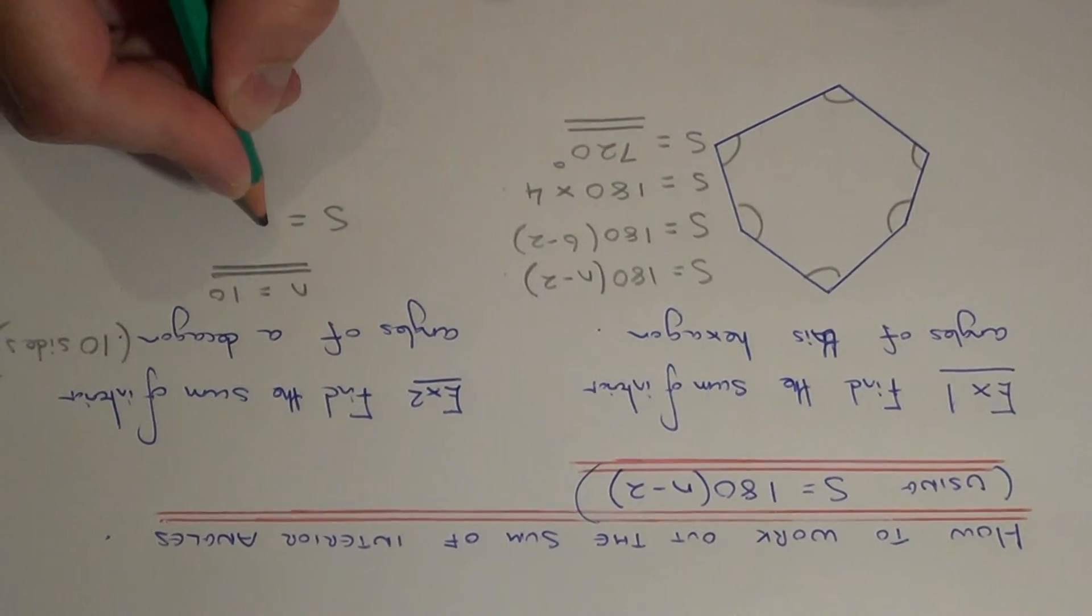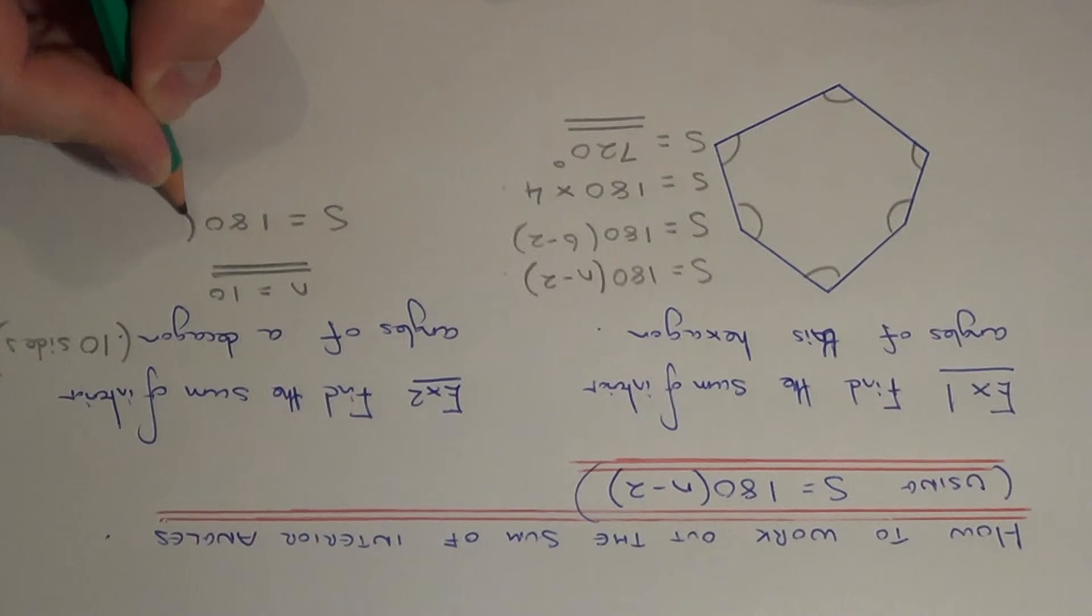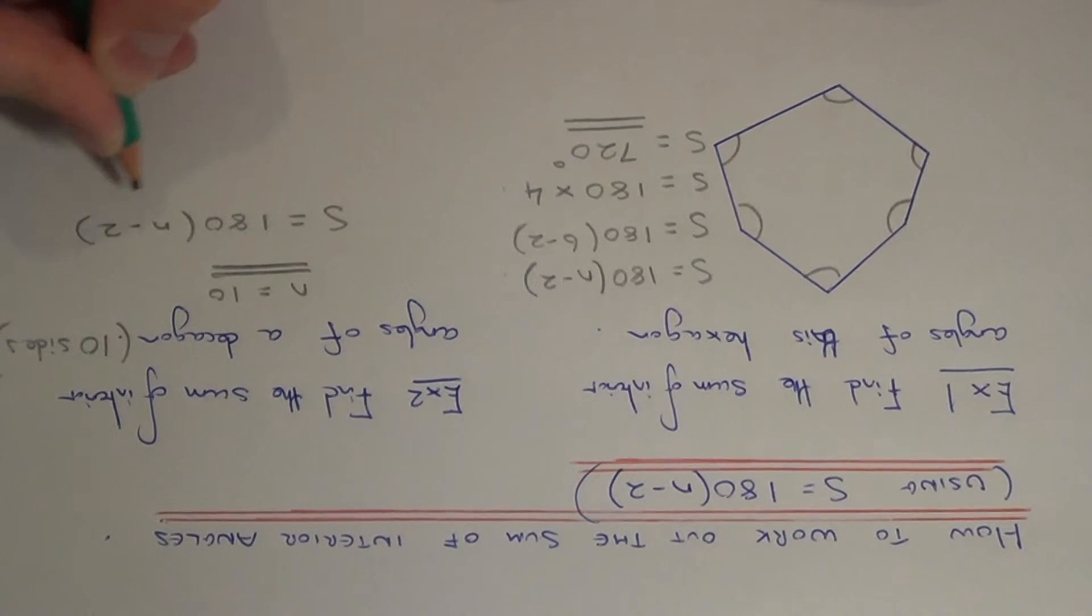So we've got S equals 180 bracket N minus 2, so that would be 180, N is 10, so it's 10 take away 2.